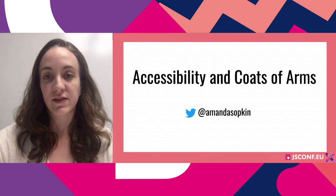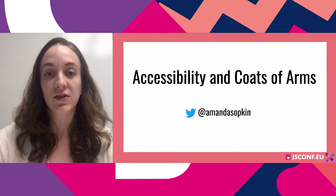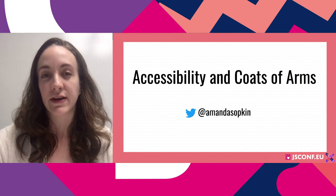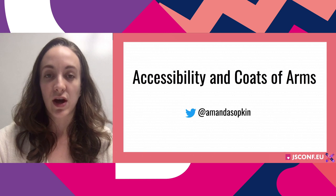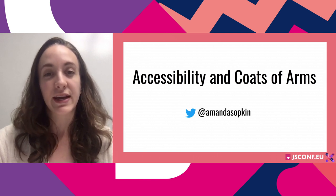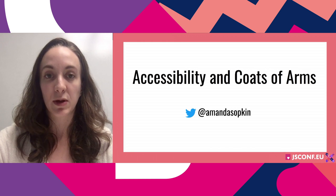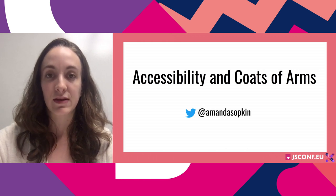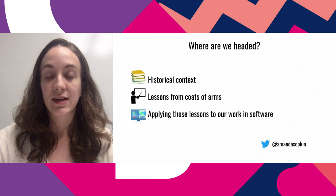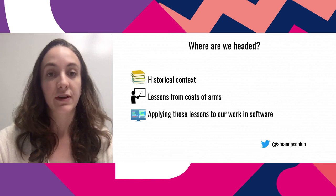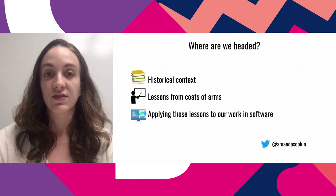The inspiration for this talk is that in software design and development, we often deal with complex problems and lessons that can feel kind of novel and new at first. But a lot of times these are problems that people have wrestled with in some capacity for years or even centuries. So I thought it would be interesting to look at design, specifically accessibility, within the historical lens of coats of arms.